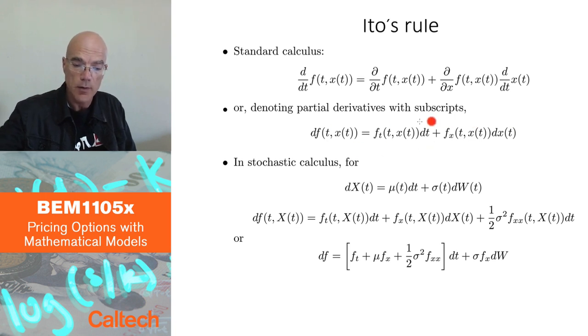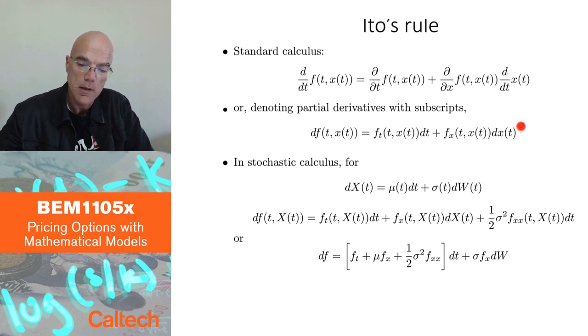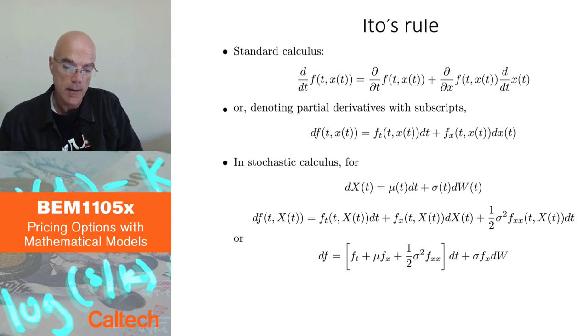I can write this as change in f is f subscript t times change in time, plus f subscript x derivative with respect to x times change in x. It turns out this is not quite true if x is random. If x is driven by Brownian motion, there will be an extra term here which comes from the Brownian motion properties. So this is just to tell you what happens in the deterministic world. Let me tell you what happens with stochastic differential equations. Let me assume that capital X is my, let's say, stock price. It's a process such that change in x is some function mu of t dt plus some function sigma of t change in Brownian motion, dW of t, where mu and sigma may be random.